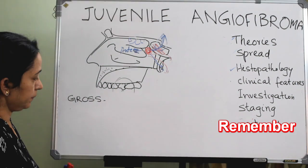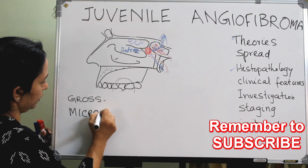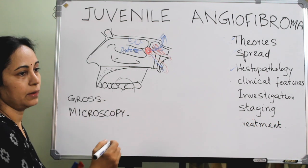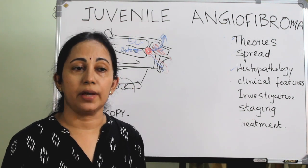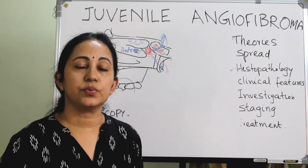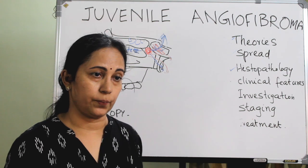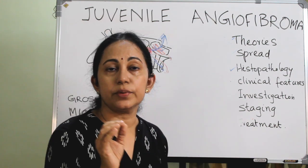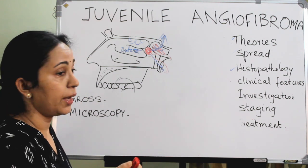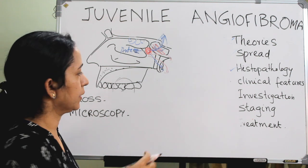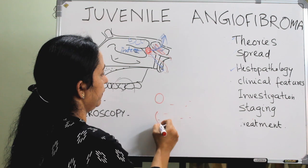Regarding microscopy, JNA shows fibrous stroma with abundant vascular channels — that is why it is red or beige in color and causes profuse bleeding. On hematoxylin and eosin staining, there is fibrous stroma and vascular channels of varying sizes.